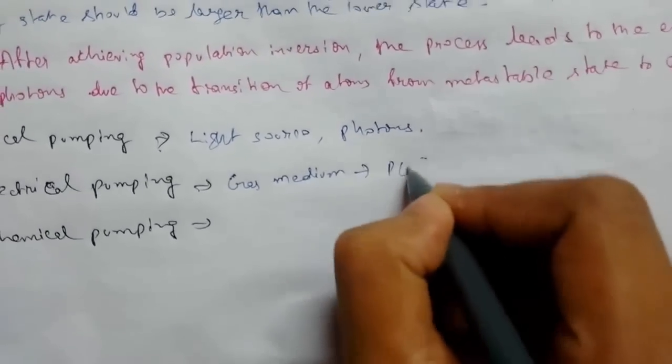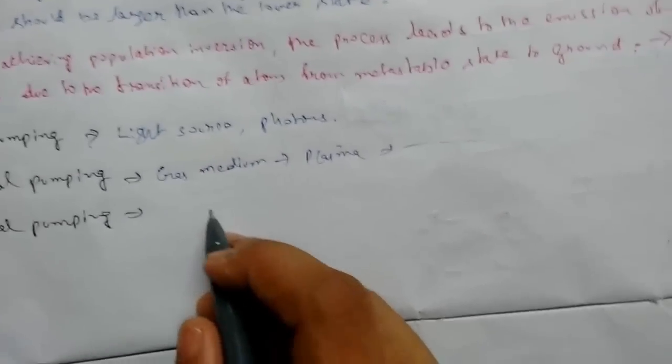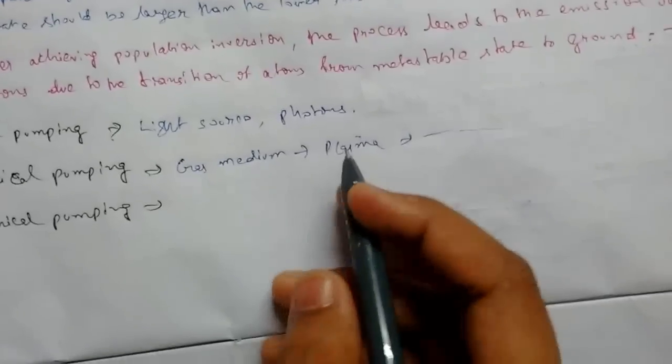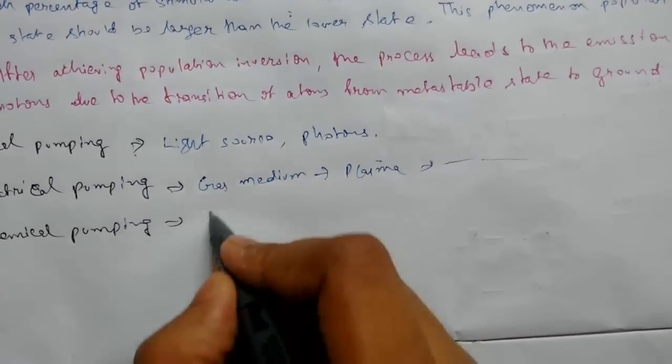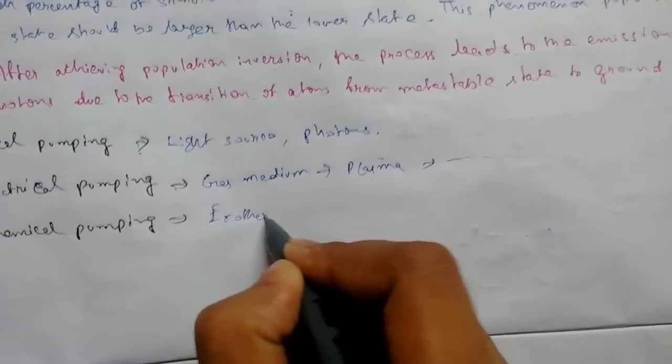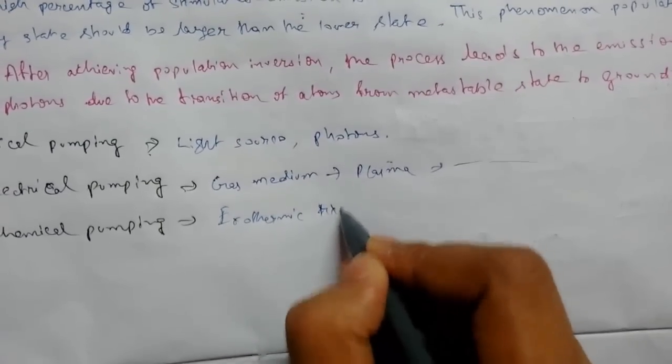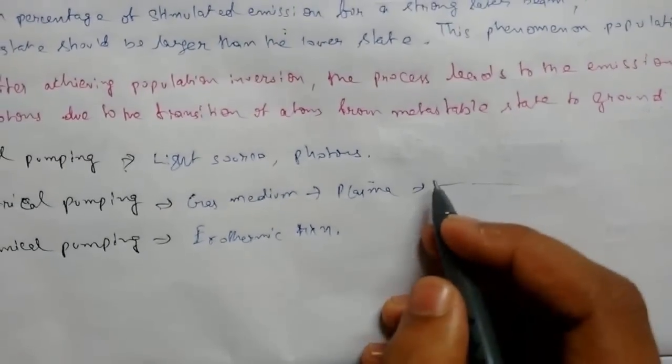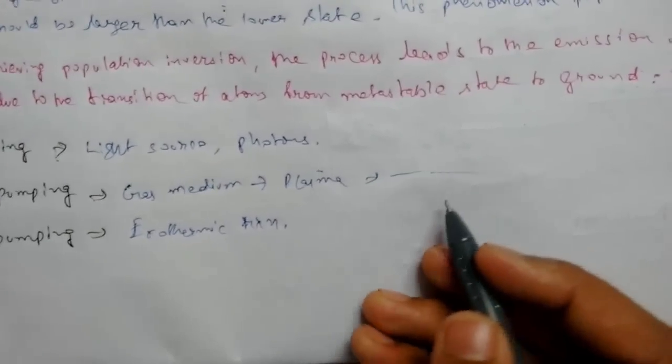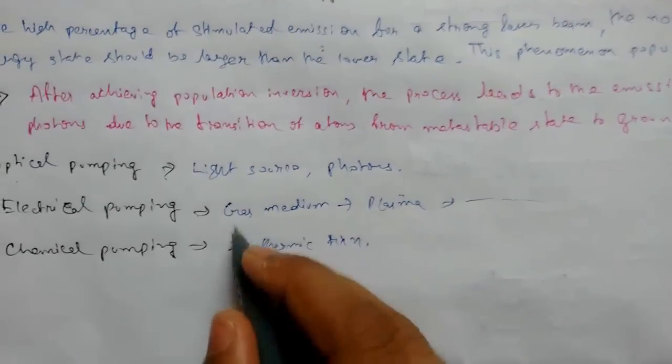In chemical pumping, the energy comes from a chemical reaction—specifically an exothermic reaction that generates heat. For example, in CO2 lasers, hydrogen reacts with fluorine and generates enough heat to pump.